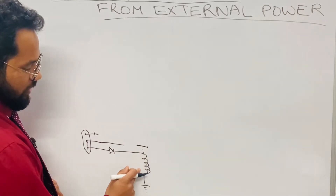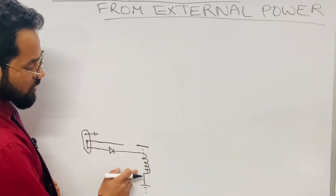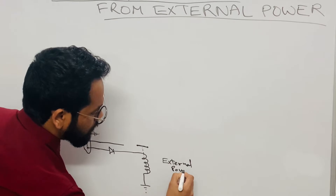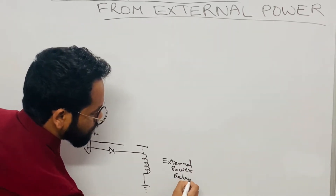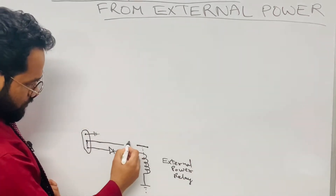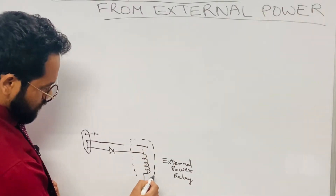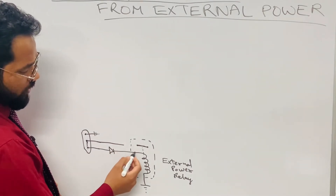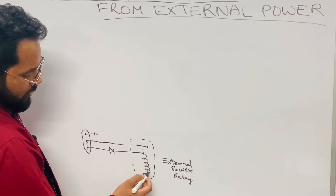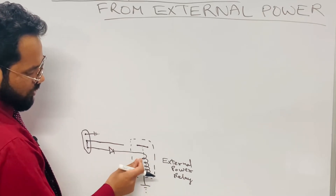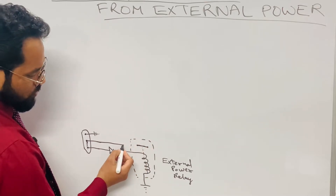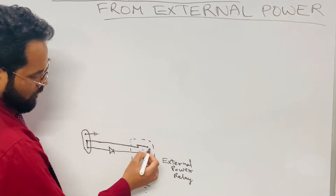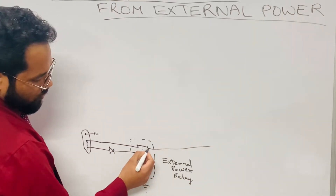This coil is of a relay whose contact is here, and the name of this relay is the external power relay. So supply is coming through this diode, it is converted to a pure positive signal, and that supply then goes to this coil. Since this coil is having a grounding path, this coil gets energized. When this coil gets energized, this contact will be closed.